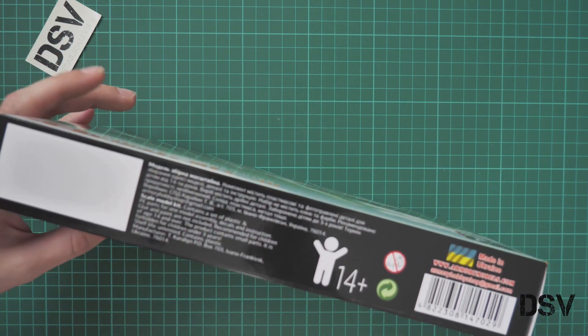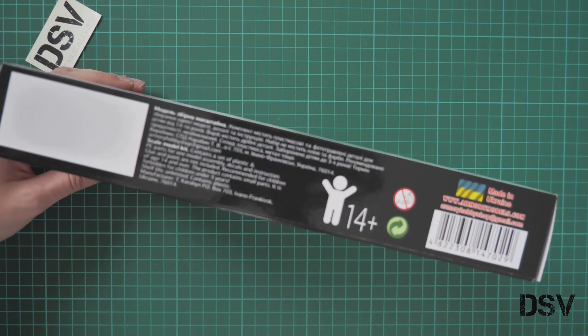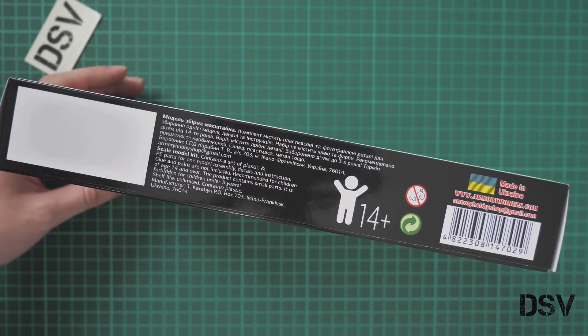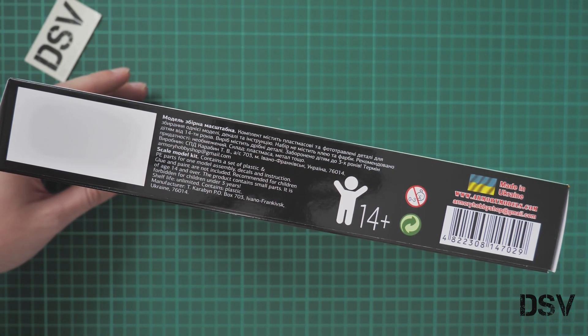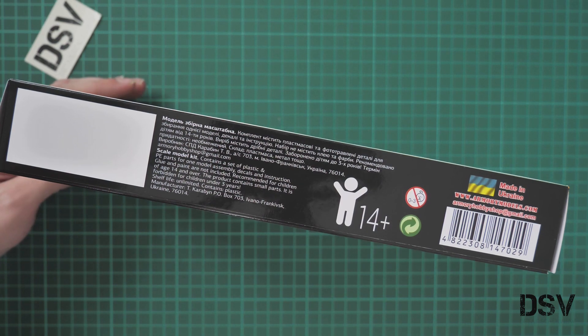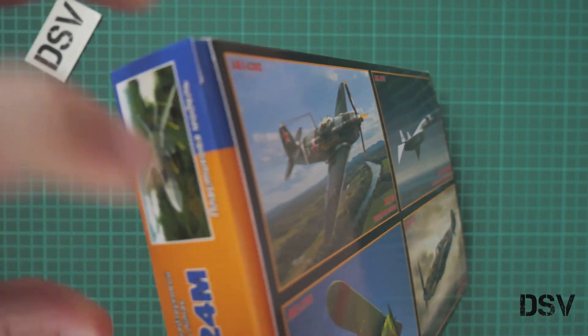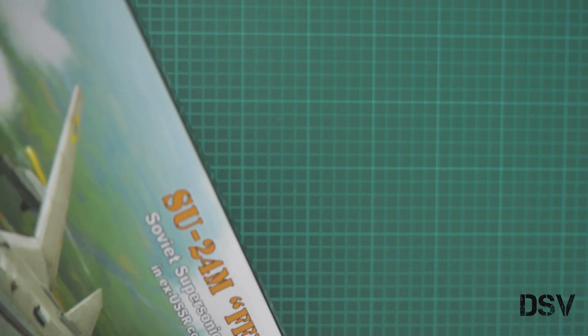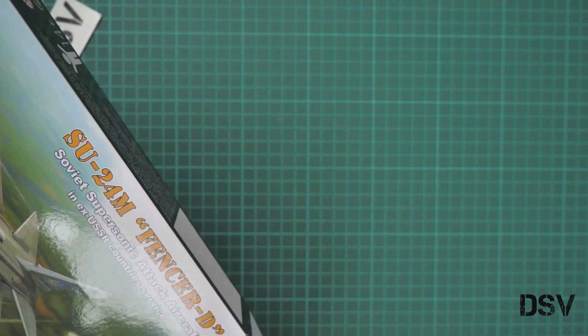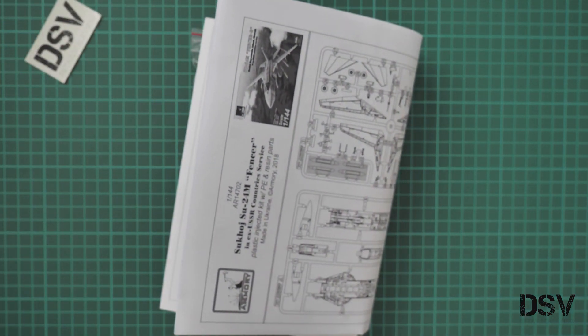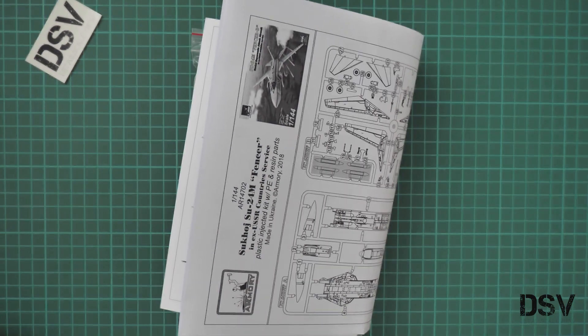Here we have some information about the kit written in Ukrainian and English. The kit contains plastic and PE parts for one model. Glue is not included. Let's open it. It's a side-opening box and here's what we have inside. I can see plastic parts and the assembly manual on the cutting mat.